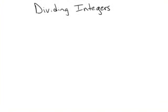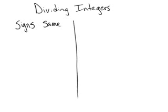Ok, let's talk about dividing integers. You have two possibilities when you're dividing integers. You can have the signs be the same or you can have the signs be different.